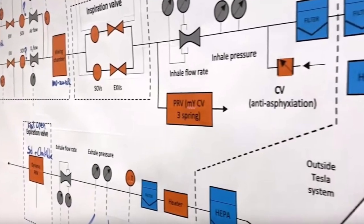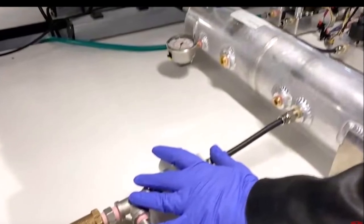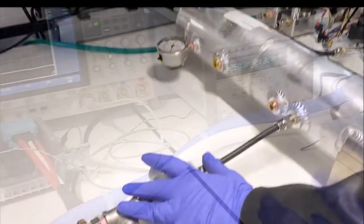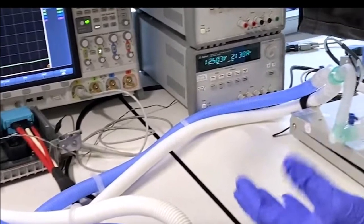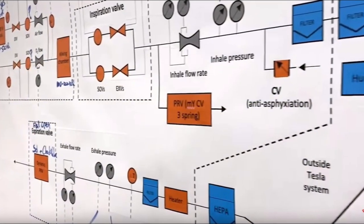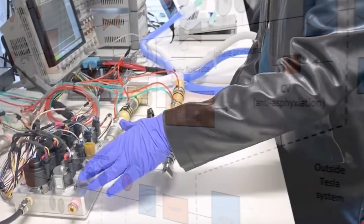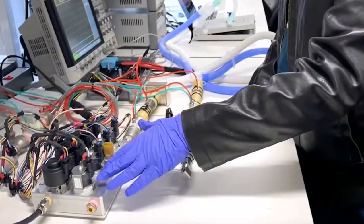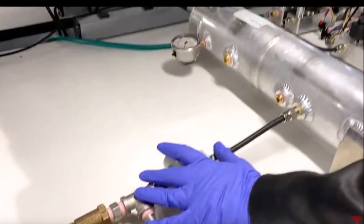Tesla's engineers show off two versions of the ventilator: a prototype model with the components laid out across a desk, as well as a packaged model that shows how it might look when used by a hospital.